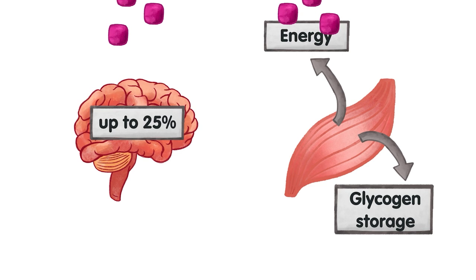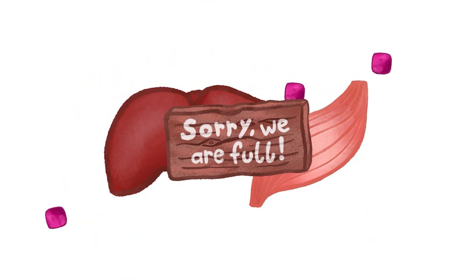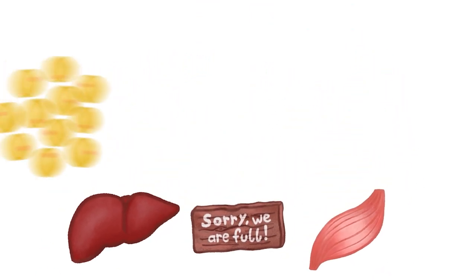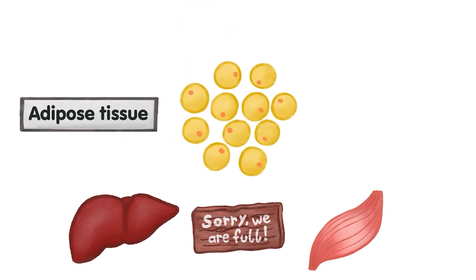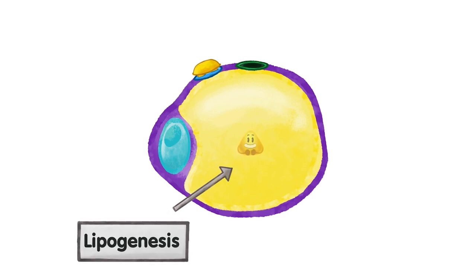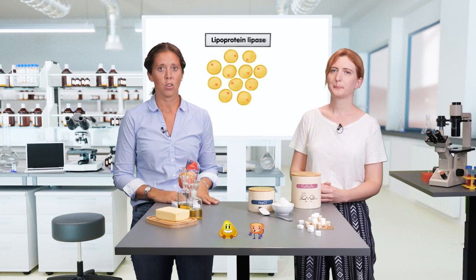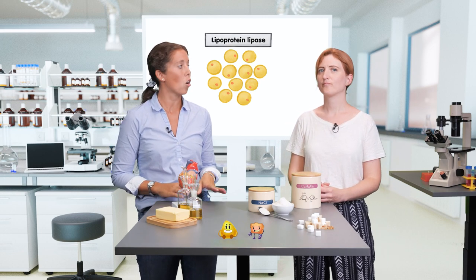But what happens if you take in more energy than you need? Once the storage of the liver and the skeletal muscle is filled, another storage organ comes into play: the adipose or fat tissue. Let's take a closer look at how this tissue works. When insulin is present, it signals to the adipocytes to take up sugar and convert it into lipids — a process called lipogenesis. Insulin also stimulates the uptake of lipids from lipoproteins by an enzyme called lipoprotein lipase. All these fats are then stored in organelles called lipid droplets.